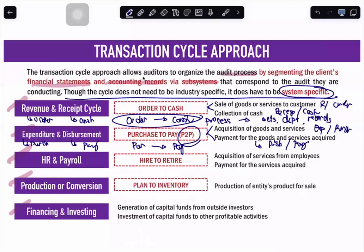Another transaction cycle is HRM payroll. It is composed of two main activities — the acquisition and payment for services — and is also known as hire-to-retire. The acquisition of services from employees is called HR, and the payment for those services is called payroll.